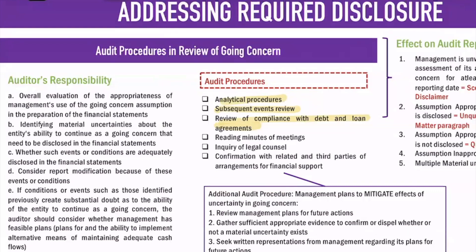You also look into the minutes of meetings, because perhaps the minutes indicate that the business is about to close, is operating at a loss, or does not have enough to pay debts — meaning it may no longer be going concern and should be presented as liquidating concern. Next, you inquire to legal counsel in case there is any possibility that the business might not continue on a going concern basis. Lastly, confirmation with related third parties regarding arrangements for financial support — because if there are already arrangements for financial support, it means the entity cannot sustain its own operation and may not be able to continue as going concern.